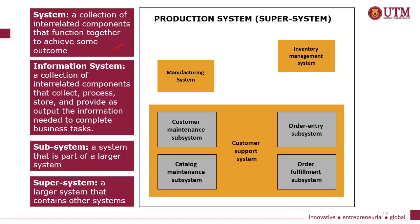A system is a collection of interrelated components that function together to achieve some outcome. An information system is a collection of interrelated components that collect, process, store and provide as output the information needed to complete business tasks. A subsystem is a system that is part of a larger system, and a supersystem is a larger system that contains other systems. For example, a customer support system has four subsystems: customer maintenance, catalog maintenance, order entry, and order fulfillment. Along with manufacturing systems and inventory management systems, this customer support system is part of what we call a production system, which is a supersystem.